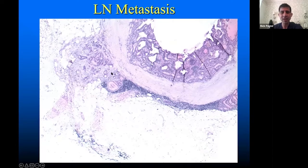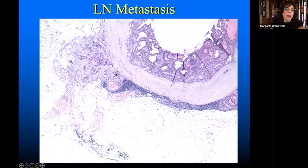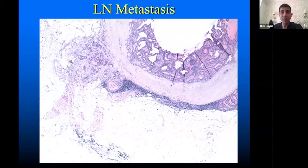Marge, do you want to comment on this area here? It's a beautiful example of ENE. If you're on the upper left quadrant of this slide, you can see it's breaking through a rather thickened capsule — extranodal extension. Which for us was a very big surprise because with RAS tumors, as I said before, we don't see metastasis like this.